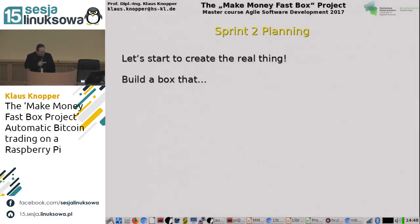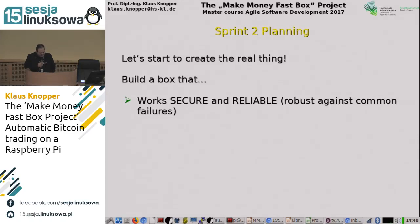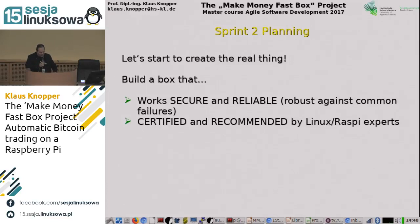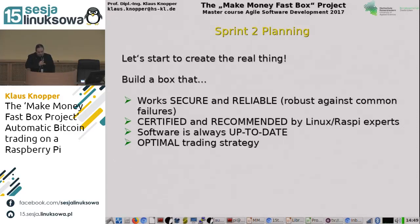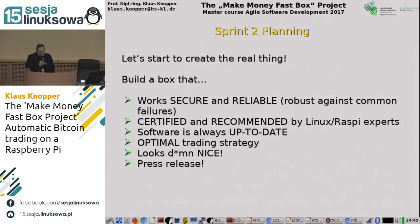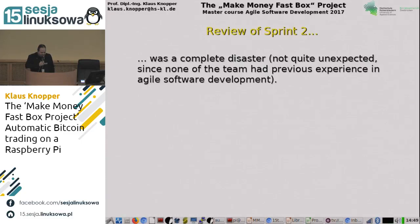Sprint 1 went pretty well, at least I thought so, and everybody said now we're ready to run. So let's build a box that works securely and reliably, robust against common failures like power loss or misconfiguration, certified and recommended by Linux or Raspberry Pi experts — an important marketing point — with software always up to date, an optimal trading strategy producing maximum gain, and a very nice appearance. Unfortunately, sprint two was a quite complete disaster, but not quite unexpected, because it was the first time our students had an agile development project.